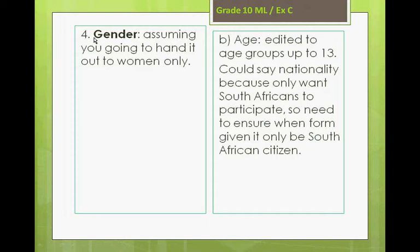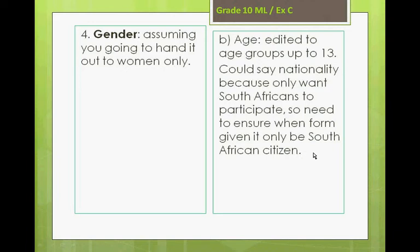For the first questionnaire about what women spend their time on, gender is a silly question because you're going to hand it out only to women. For the teeth-brushing habits of children, the age groups over 18 are unnecessary — you should only use smaller age groups up to about 13 or 16. Nationality is relevant because you only want South Africans to participate, so you can ensure it is only answered by South Africans and discard the rest.